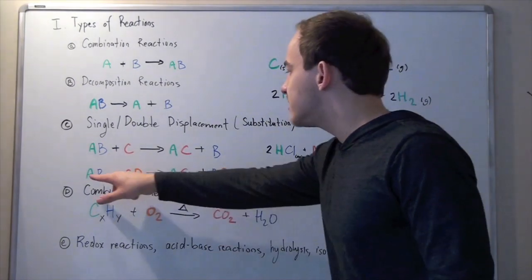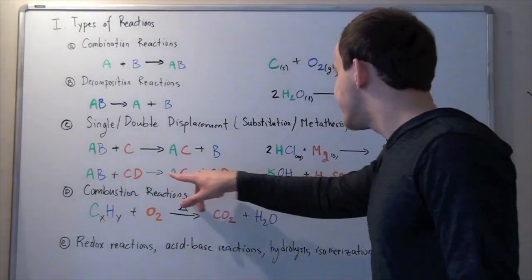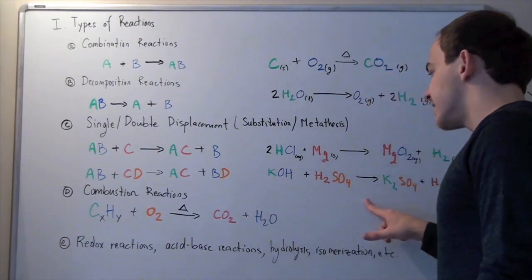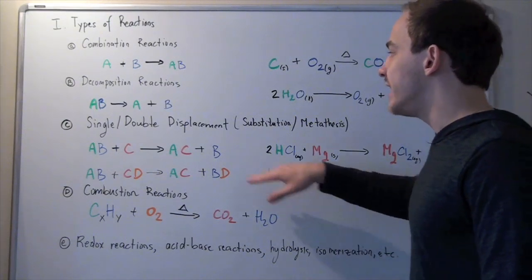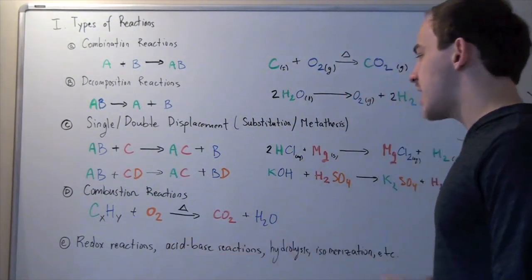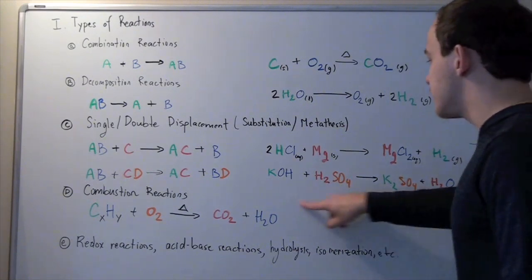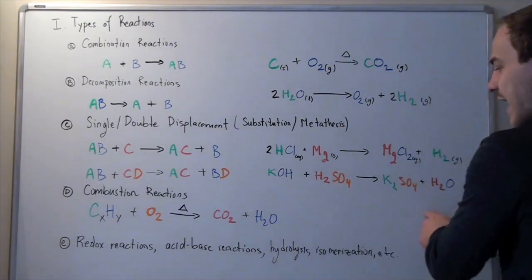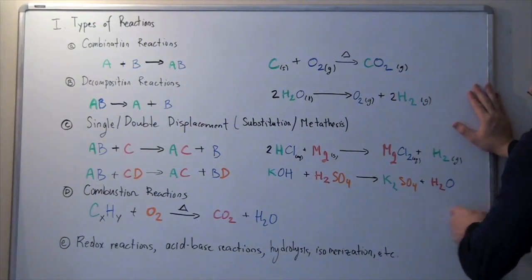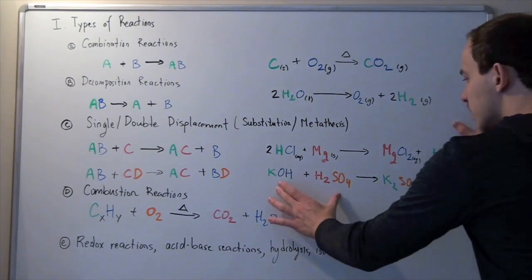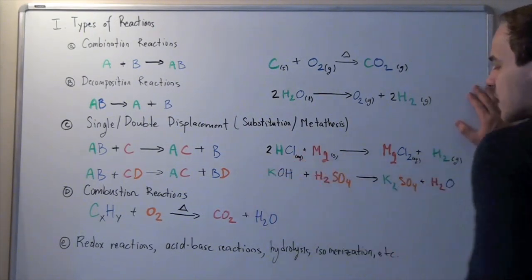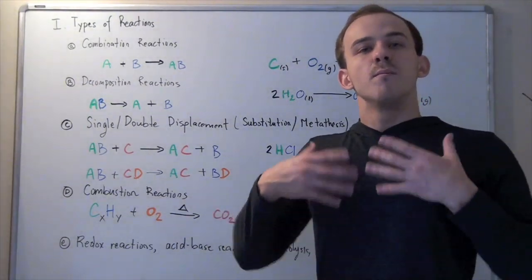Likewise, the double displacement or metathesis reaction we looked at — where a base, potassium hydroxide, reacts with an acid — is not only a double displacement reaction but also an acid-base reaction. Furthermore, the reverse of that reaction is actually a hydrolysis reaction, because water acts as a nucleophile displacing one of those molecules to form our product. The key point is that reactions can belong to more than one category.